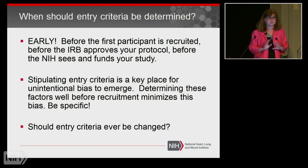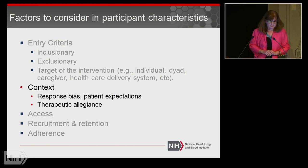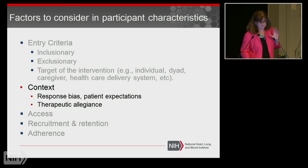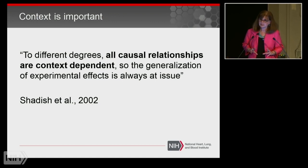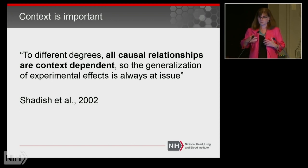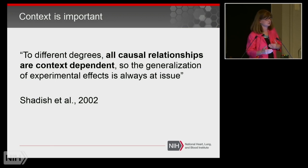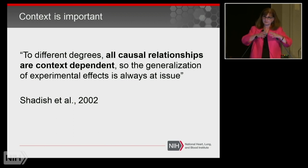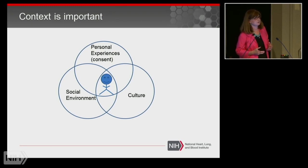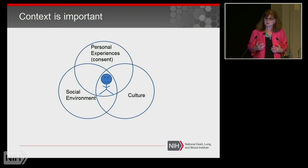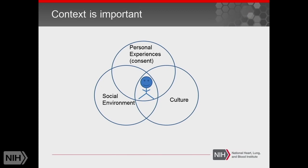There are lots of contextual factors to think about when considering who to include in your studies. Context is really important. When you are a researcher engaging with a participant, you have a relationship, and that relationship has context. Participants who come into your study have a whole world of context — almost none of which you're aware of. Context includes things like personal experiences, background, culture, social environment, how a participant feels on that particular day, and the relationship you as a researcher have with them.